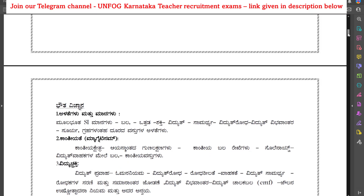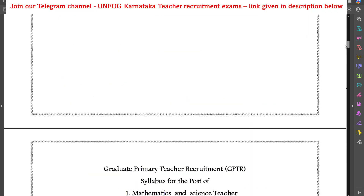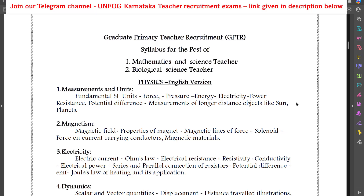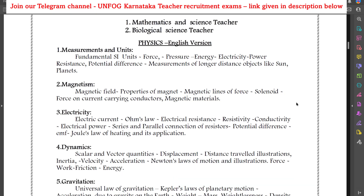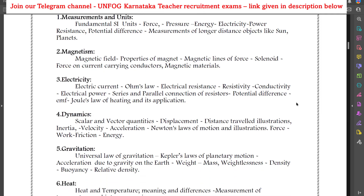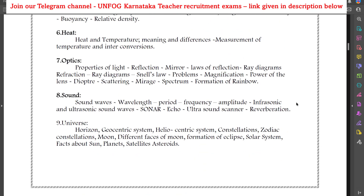Moving on to the science syllabus — this is for both mathematics and science teacher (PM method) and biological science teacher (CB method) aspirants. The physics syllabus includes: measurements and units, magnetism, electricity, dynamics, gravitation, heat, optics, sound, and universe.